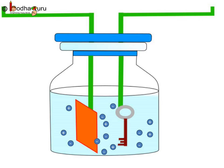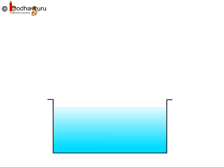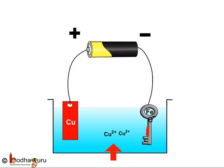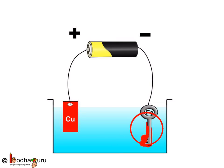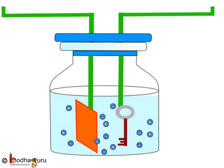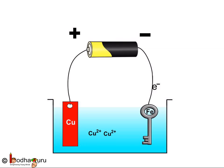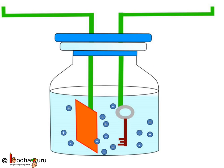So, let us understand what is going on. When electric current is passed through the copper sulphate solution, copper sulphate dissociates into copper and sulphate. The free copper gets drawn to the electrode connected to the negative terminal of the battery and gets deposited on it. But what about the loss of copper from the solution? From the other electrode — a copper plate — an equal amount of copper gets dissolved in the solution. Thus, the loss of copper from the solution is restored and the process keeps going. This means that copper gets transferred from one electrode to the other.